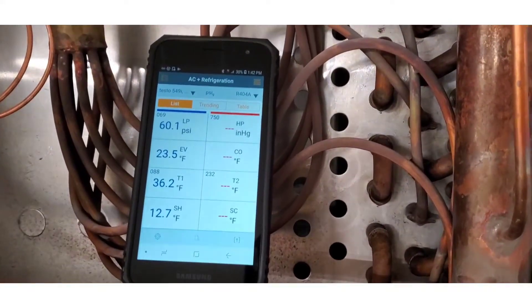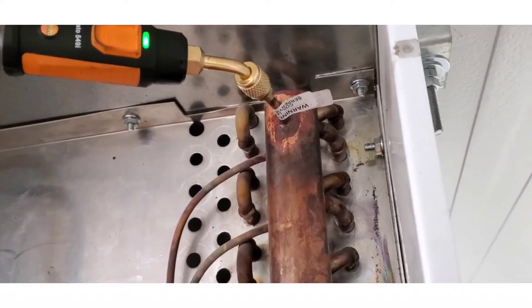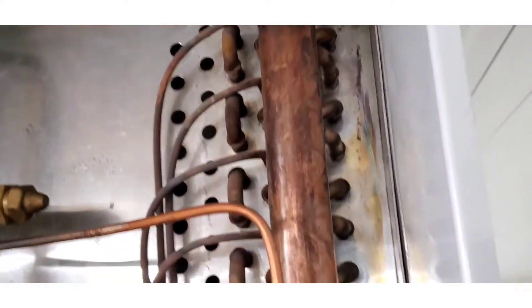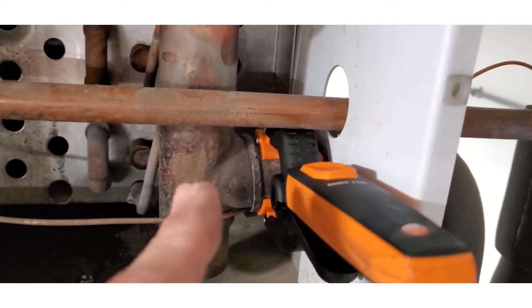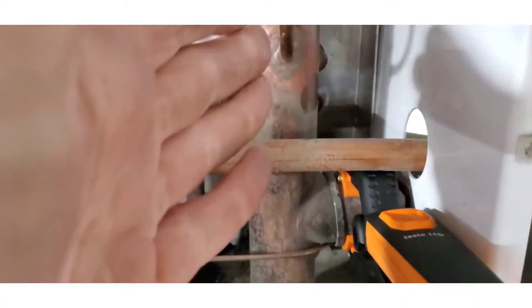Okay, this is the fun part. We have the probes on. We got the pressure probe here on the header of the suction pipe coming out of the evaporator. And we also have our temp clamp on the suction pipe going perpendicular to the header here.